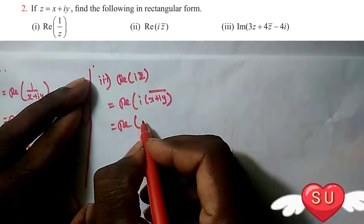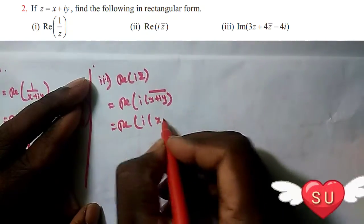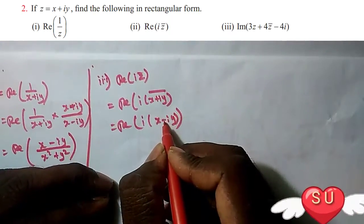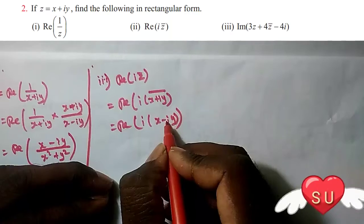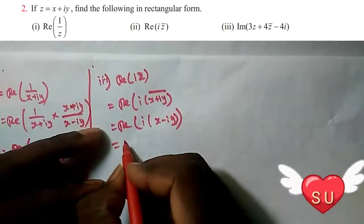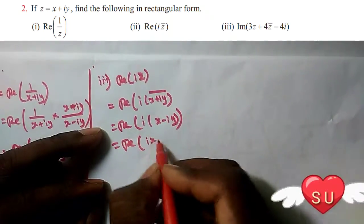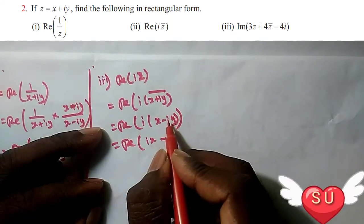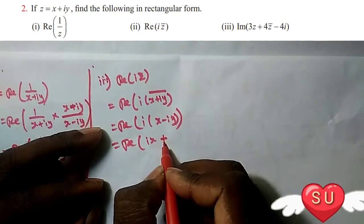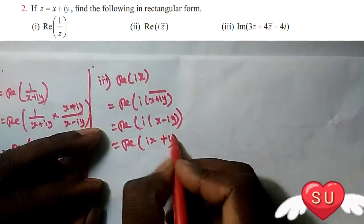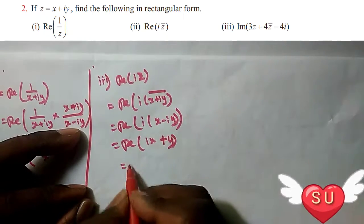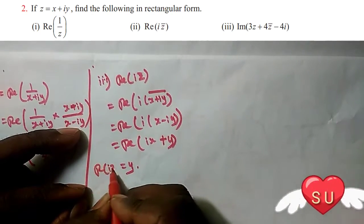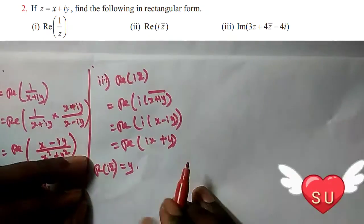Real part of i times X minus iY — the bar cancels. So, real part of iX minus i²Y. Since i² equals minus 1, we get minus iX plus Y. So the real part of i·Z̄ equals Y.